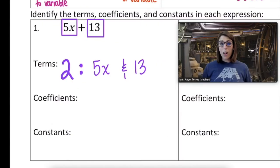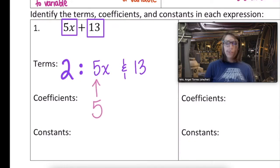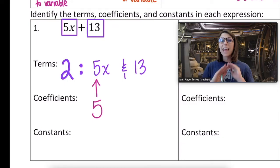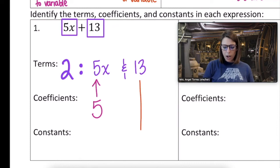First of all, I noticed that number one has two terms and they are 5x and 13. 5 is the coefficient and the only coefficient in this expression. So then what's the constant? It's the number standing all on its own, 13.